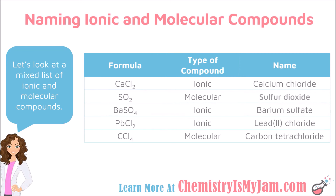In the last example, I ask: is there a metal? No — carbon and chlorine are both nonmetals, so it is a molecular compound and I need to use prefixes. There's only one carbon — the prefix for 1 is mono, but I do not have to put mono for the first element. The prefix for 4 is tetra, so this is carbon tetrachloride.